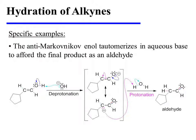In the presence of the aqueous base used for this reaction, the enol tautomerizes through a deprotonation which yields an anion that is resonance stabilized, and that anion is then protonated at the electron-rich carbon to afford an aldehyde as the final reaction product. It's worth comparing this to the methyl ketone that was formed from the Markovnikov hydration of the same alkyne reactant.